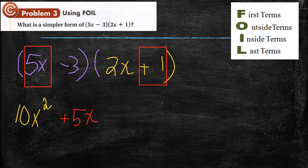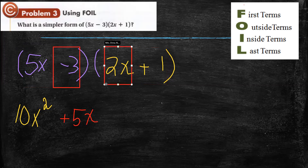Inside terms — if 5x and 1 are outside, then who will be inside? Negative 3 and 2x. They are inner, sitting close to each other. So I multiply negative 3 times 2x, which gives negative 6x.